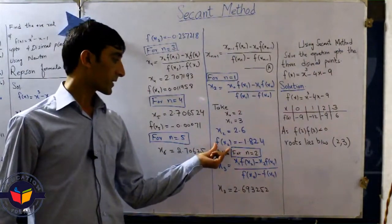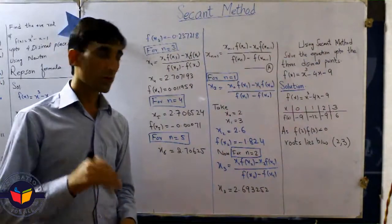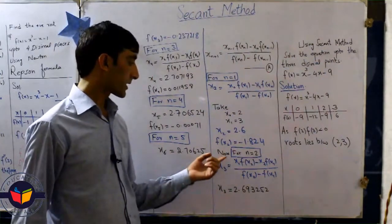After that we put f of x2 in this form. Now we move on the next step that is for n equal to 2.